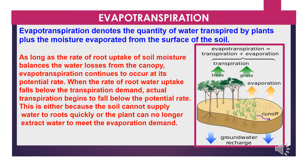Now we will discuss evapotranspiration. Evapotranspiration denotes the quantity of water transpired by plants plus moisture evaporated from the surface of the soil. As long as the rate of root uptake of soil moisture balances the water losses from the canopy, evapotranspiration continues to occur at its potential rate. When the rate of root water uptake falls below the transpiration demand, actual transpiration begins to fall below the potential rate, either because the soil cannot supply water to roots quickly or the plants can no longer extract water to meet the evaporation demand.